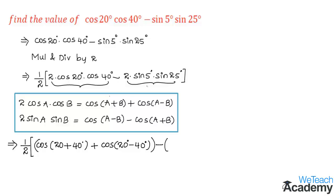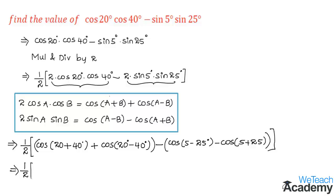Moving to the second term, expanding 2sin5°·sin25° using the formula gives: cos(5°−25°) − cos(5°+25°), which is cos(−20°) − cos 30°. Closing the bracket, our full expression is (1/2)[cos 60° + cos(−20°) − cos(−20°) − cos 30°].